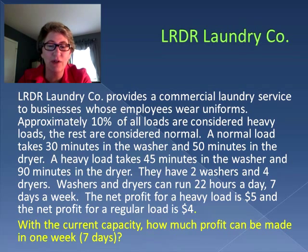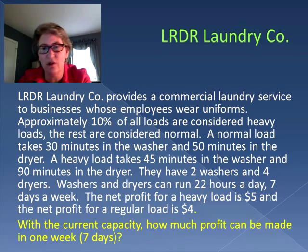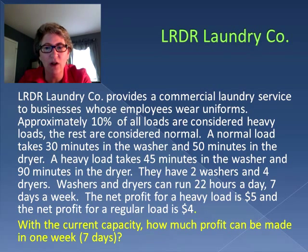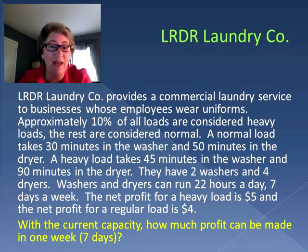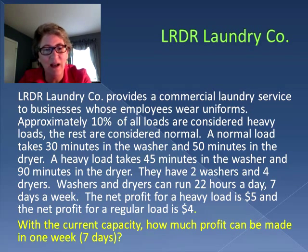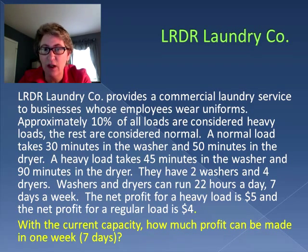Approximately 10% of all the loads are considered heavy loads, and the rest are considered normal loads. A normal load will take 30 minutes in the washer and 50 minutes in the dryer, whereas a heavy load takes longer: 45 minutes in the washer and 90 minutes in the dryer. They have two washers and four dryers, and those washers and dryers can run 22 hours a day, seven days a week.